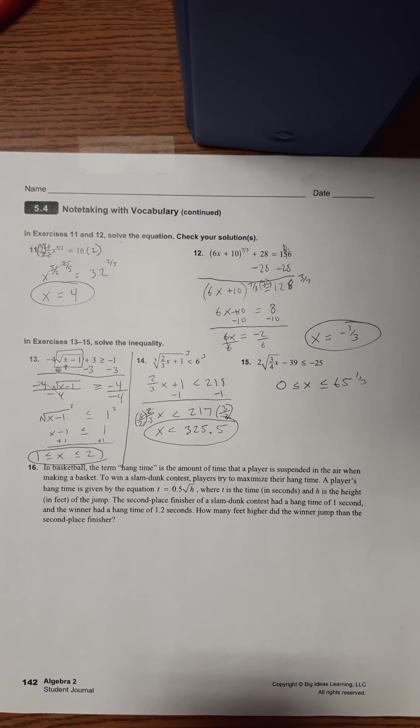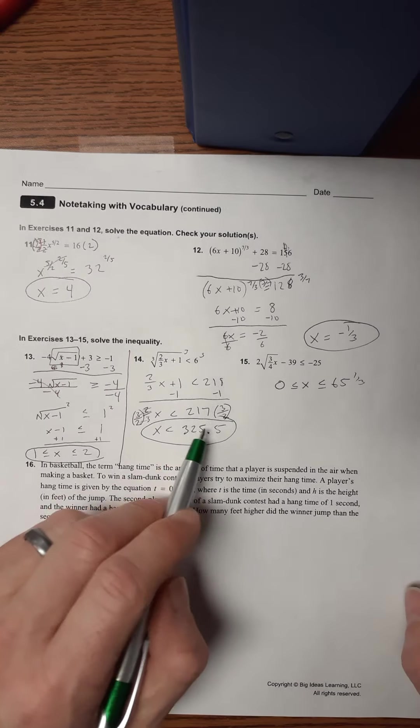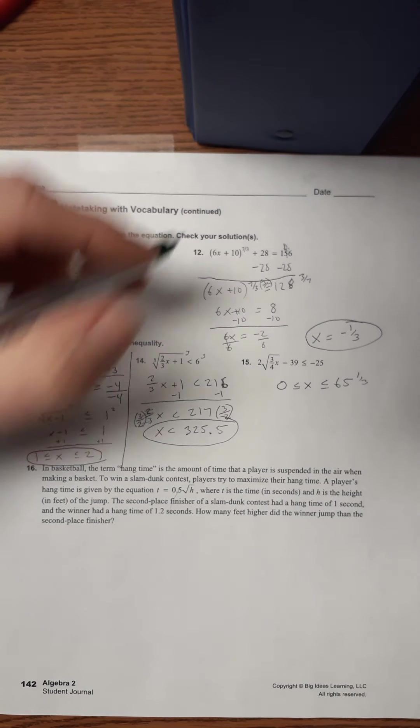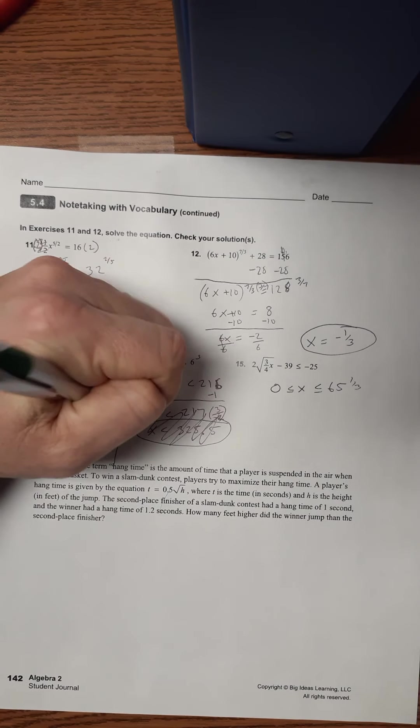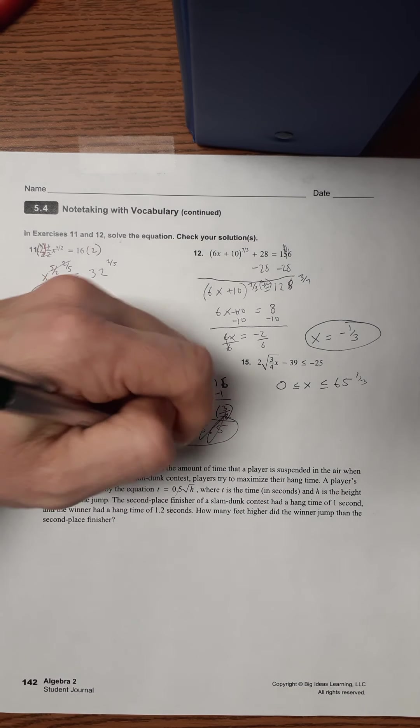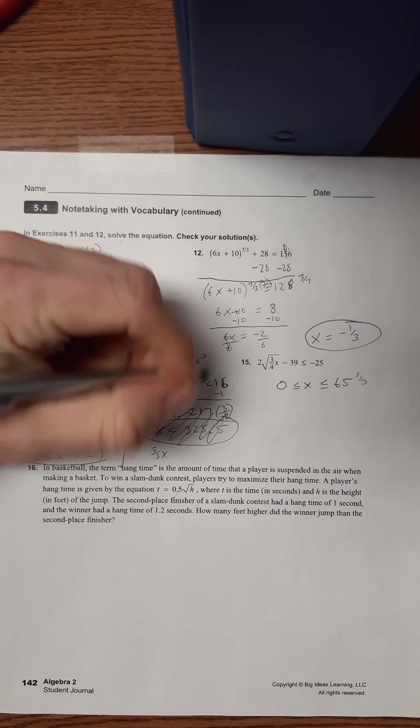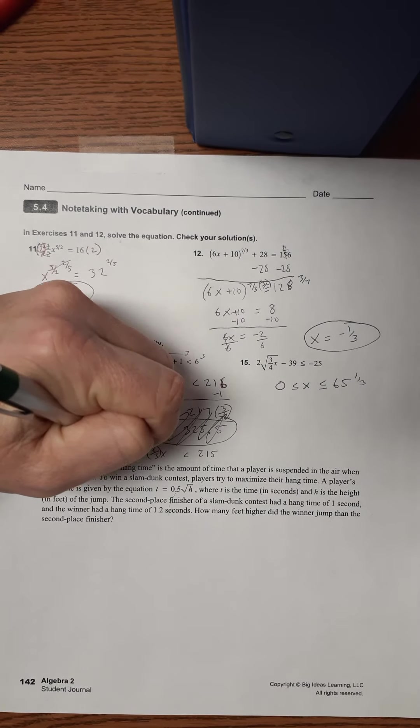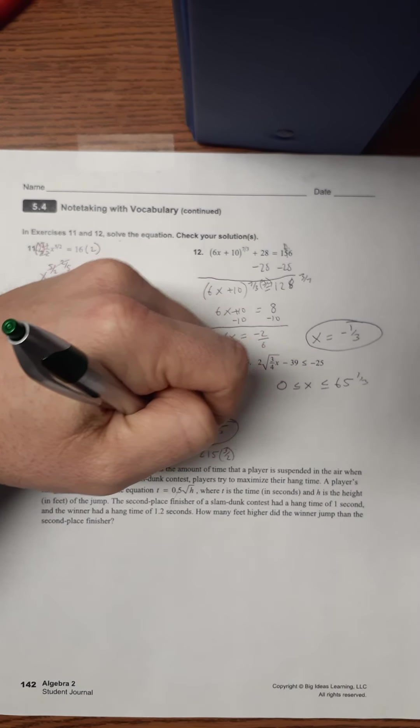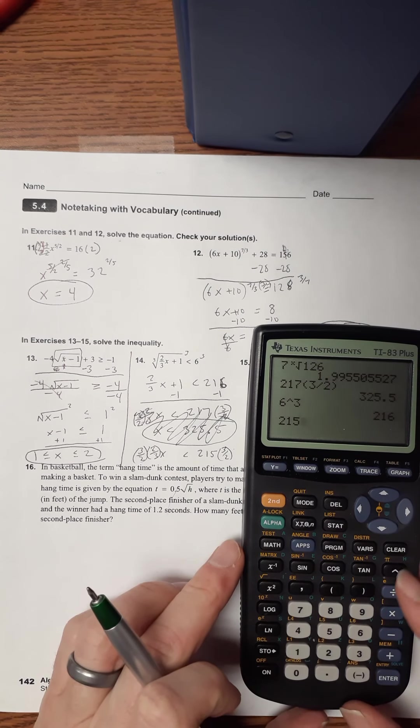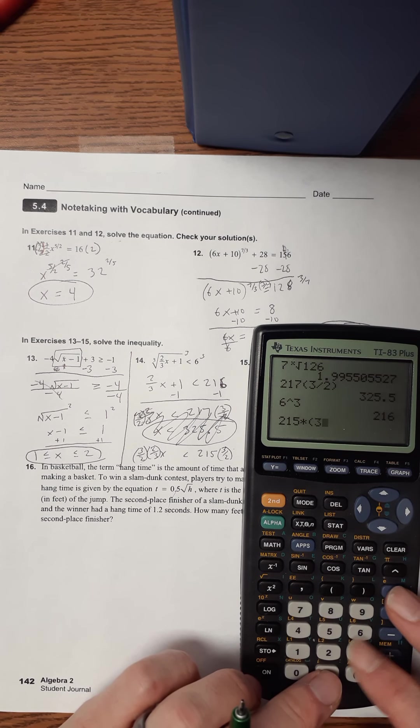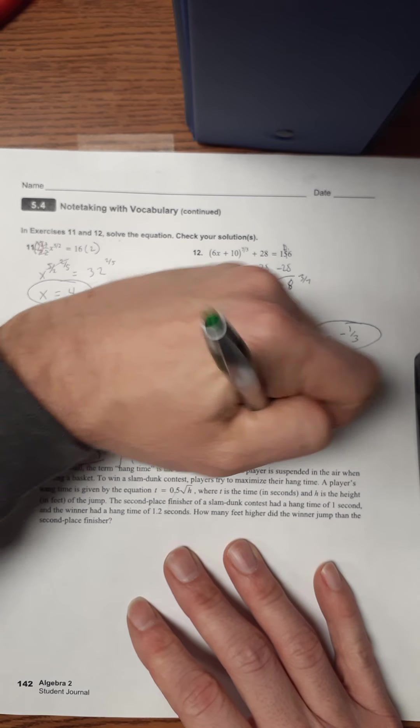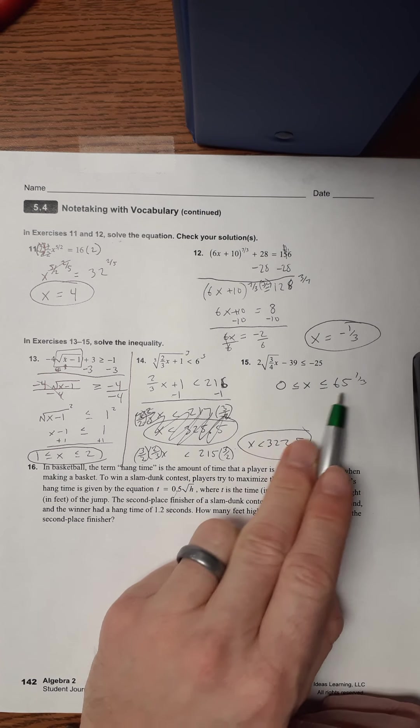And one more thing before I leave. I made a mistake on this one. If you do 6 to the third root, you don't get 218. You get 216. I suspected that I had made a mistake here. So, that means that if I follow it to this step now, now I've got 2 thirds x is less than 200 and after we subtract the 1, 215. And then if I multiply this by 3 halves. Now I'm going to get 215 times 3 halves. 322. So, x has to be less than 322.5. Sorry about that mistake.